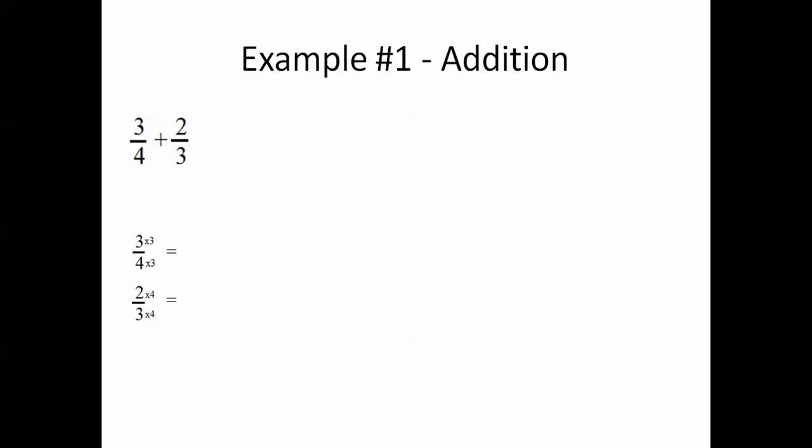So when we multiply on the top, for example with three quarters, by three and the bottom by three, we are actually multiplying by one, because three divided by three is one. So that is why we can actually do this.